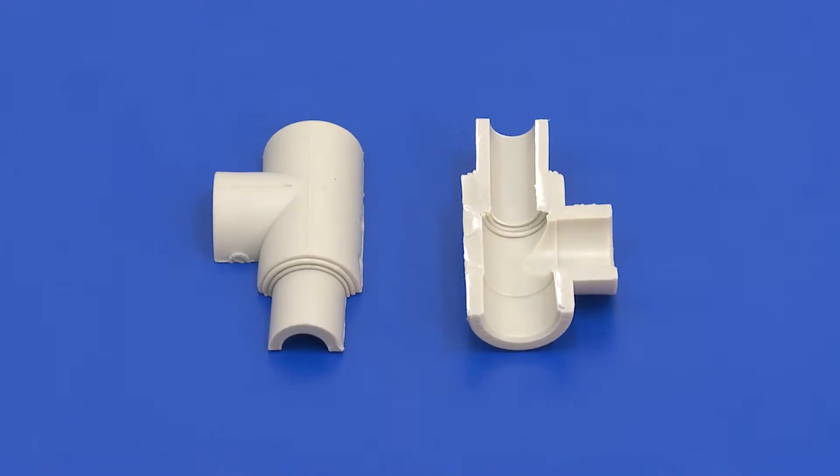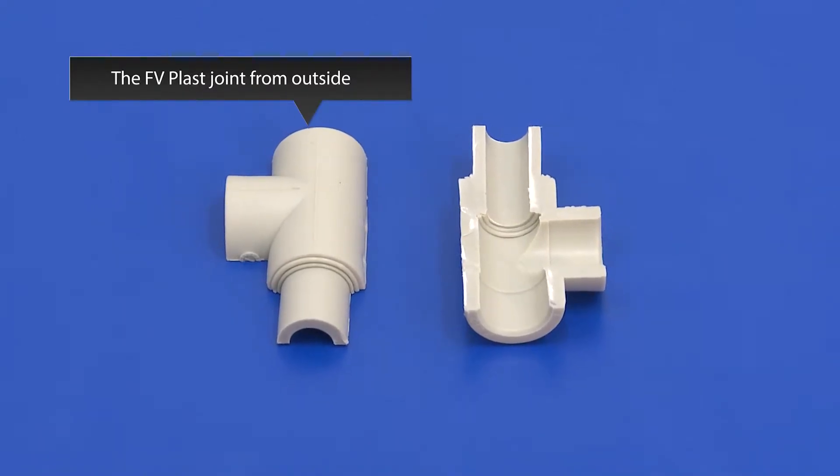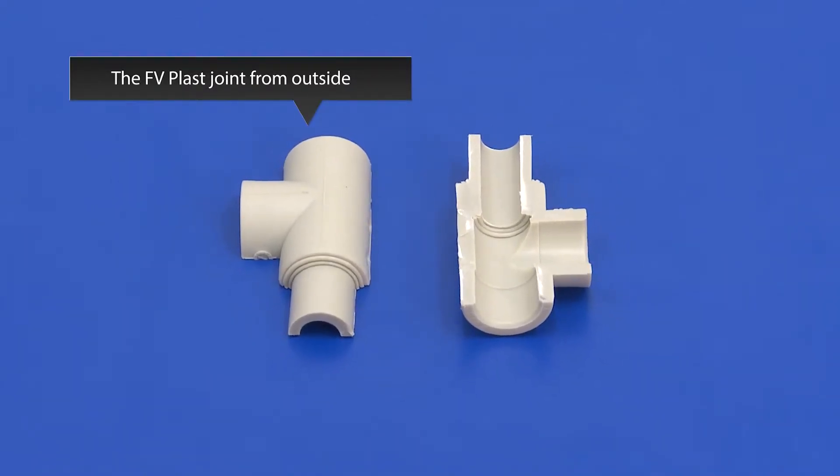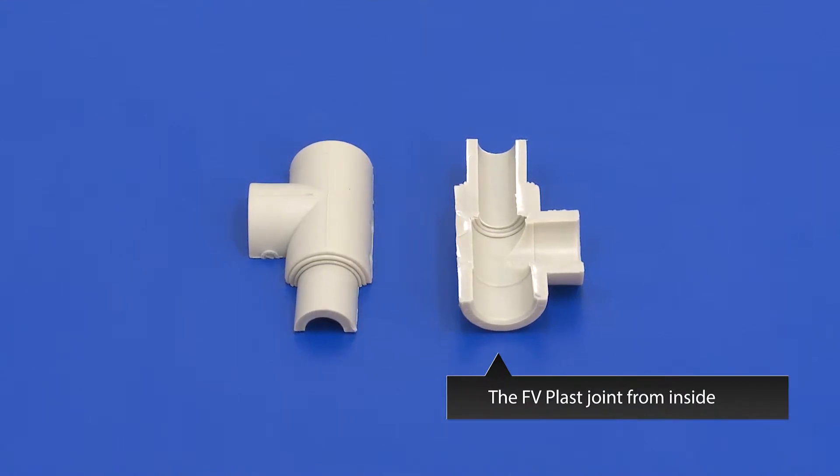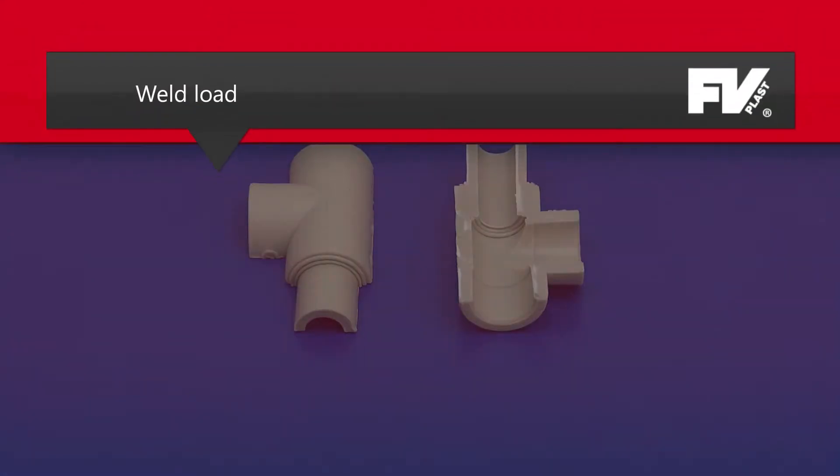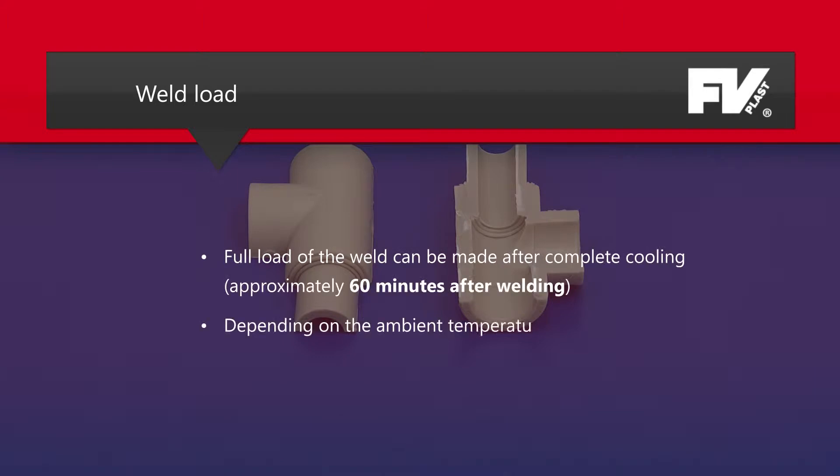This is a view of a quality finished connection of the FV Plast system from outside and this is a view from the inside. Full load of weld can be made after it is fully cooled after about one hour depending on the ambient temperature.